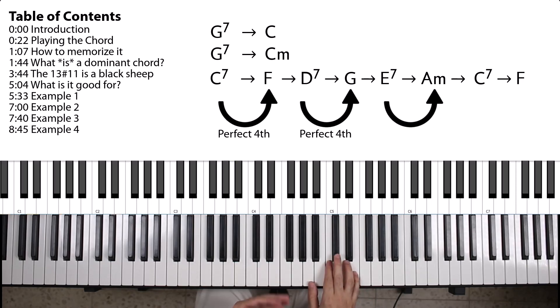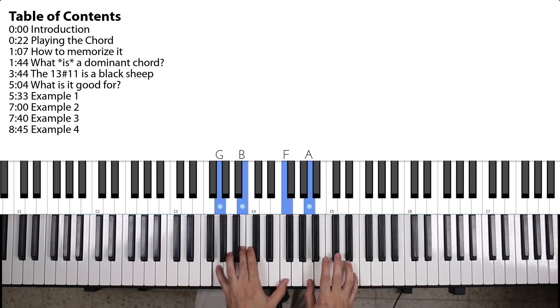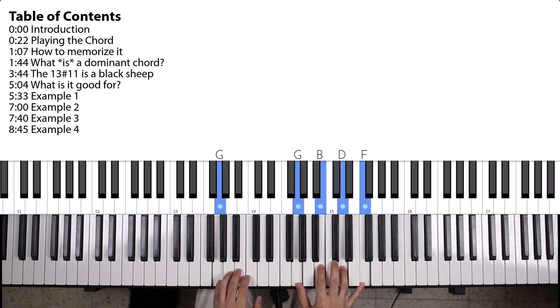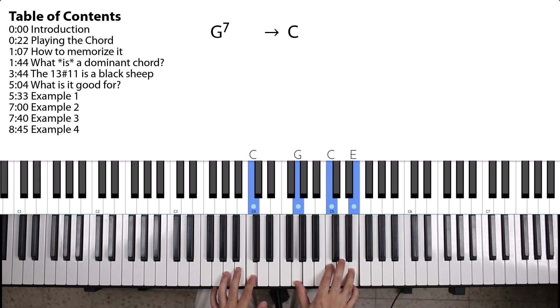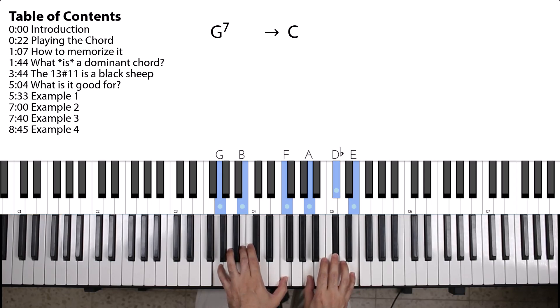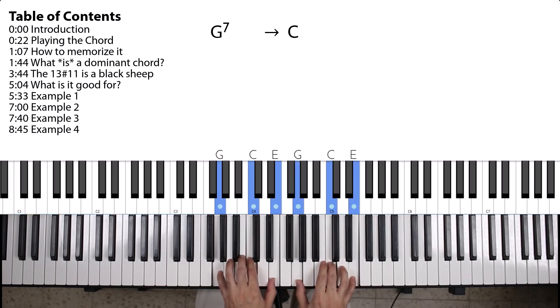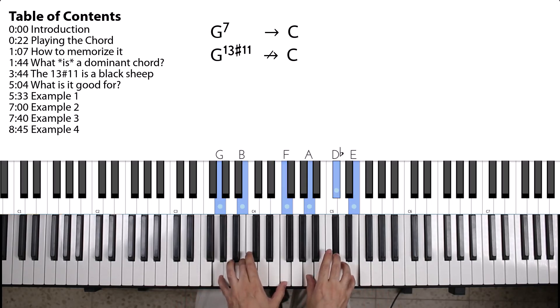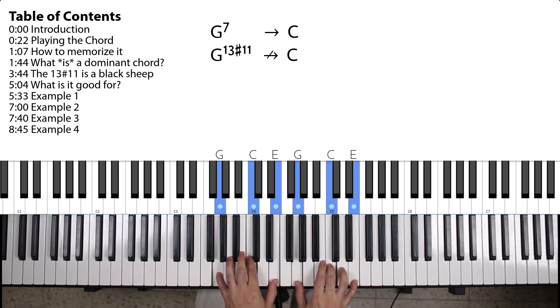Now, the problem with the 13th sharp 11th chord is that it doesn't really resolve to neither the major nor the minor chord that is a perfect 4th above it. So, the natural thing for a dominant G7 chord would be to resolve to a C, let's say a C major. But if I play this 13th sharp 11th chord, it doesn't really resolve that nicely. Have a listen again. It doesn't sound like a strong resolution. This chord doesn't really want to go here.